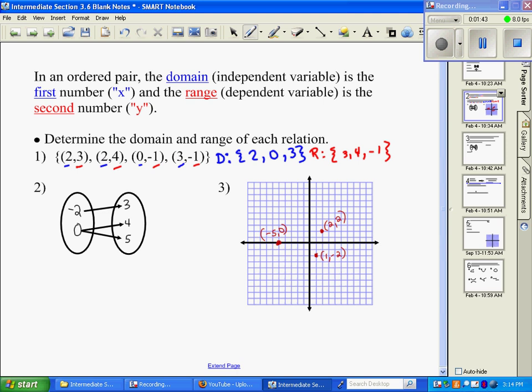Number 2, we're looking at a mapping, and if it helps to write your mappings out as ordered pairs, then that may help you to see your domain and range. That may make it a little bit easier. So when we name our domain in number 2, our domain is going to be negative 2, 0, and then 0 again. But like we said, we only have to list it one time. And then our range is just going to be our Y values. So it's 3, 4, and 5.